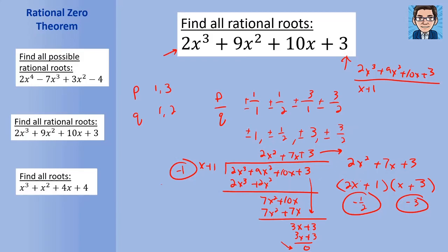This method is important for two reasons. First, sometimes you'll get 16 or more possible numbers to try, especially when the constant term and leading coefficient have many factors. Second, if we're trying to find non-rational roots, we're going to need this division method too, as I'll show in the next problem.